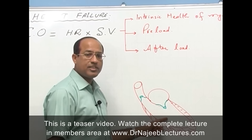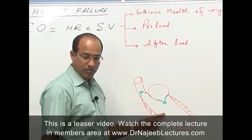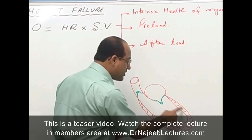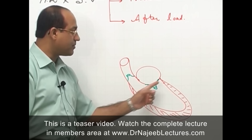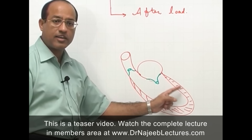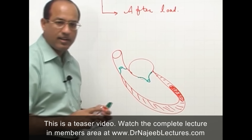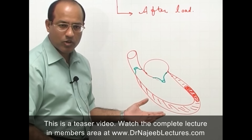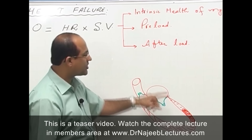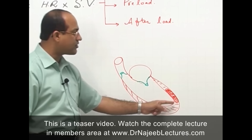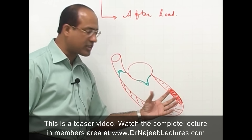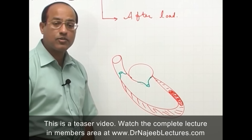The factors affecting cardiac output include: number one, heart rate — how many times the left ventricle contracts per minute; and number two, the intrinsic health of the myocardium — is it healthy or diseased? If the myocardium is healthy, cardiac output is better. But if a big piece of myocardium is infarcted, that area will not contract well, leading to poor cardiac output.